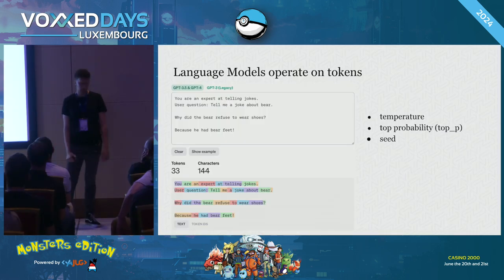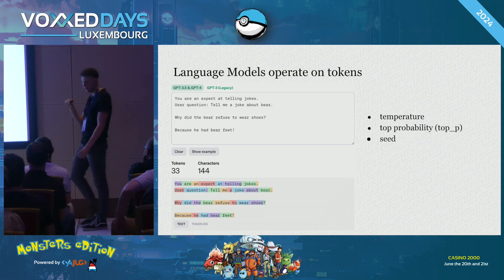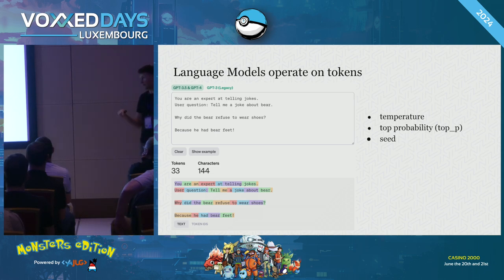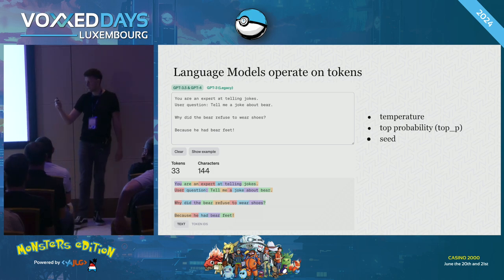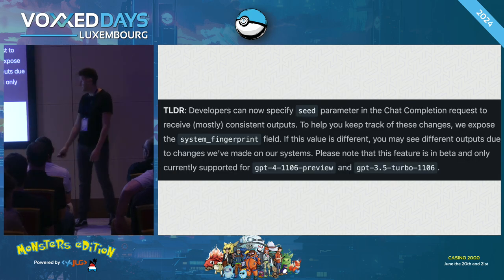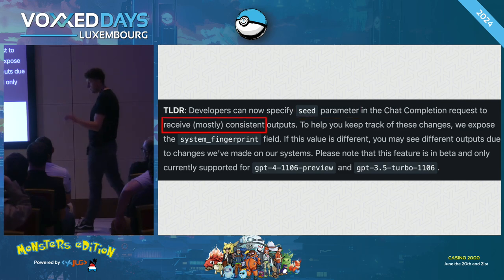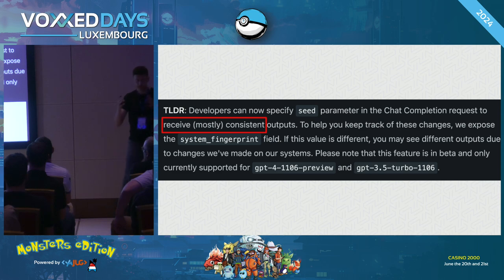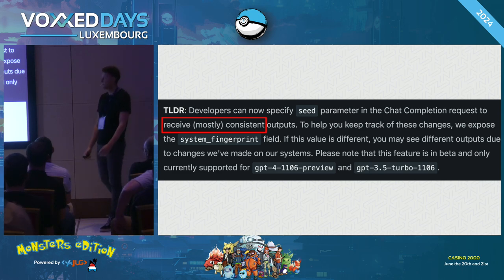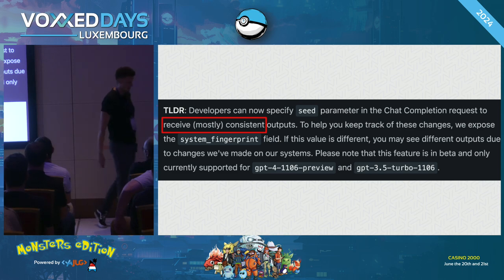The last parameter is called seed. You've probably seen this whenever dealing with random number generation. But it doesn't work exactly the same way — with random number generation, the same seed gives the same sequence. But the OpenAI documentation says the seed parameter allows you to receive 'mostly consistent' outputs. It's a bit ironic to use the word 'consistent' with 'mostly.' There is no guarantee — it works many times, but there is no guarantee.